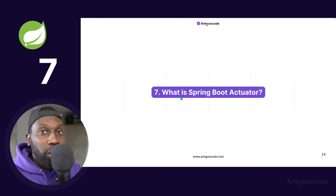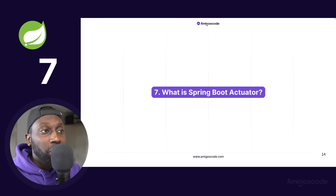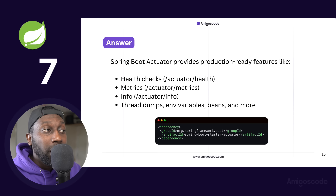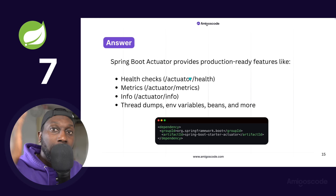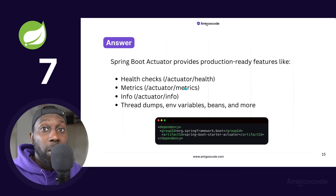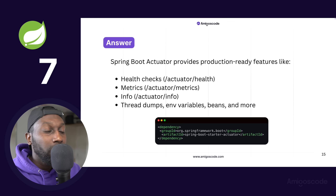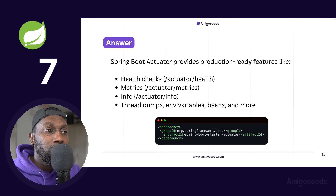What is Spring Boot Actuator? This is one of the production-ready features. It allows you to provide health checks at /actuator/health, which is useful if your application is behind a load balancer so it can check whether the app is healthy. It also provides metrics such as CPU usage, memory, as well as thread dumps, environment variables, beans, and much more.